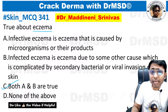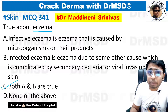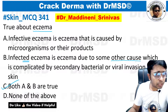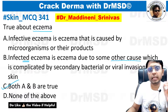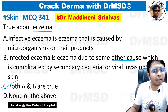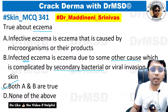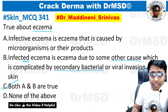Looking at infected eczema — from the grammar itself you can understand that there is a pre-existing eczema, i.e., a dermatitis of any underlying cause. For example, say atopic dermatitis in a child. If you notice there is a secondary bacterial infection — say Staphylococcus — then we call this eczema as infected eczema.